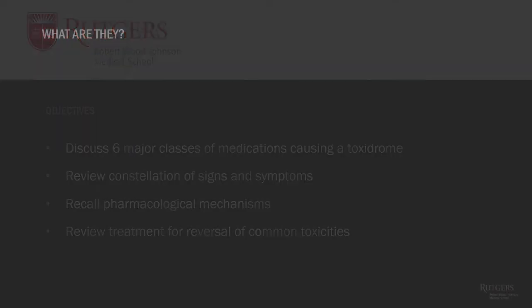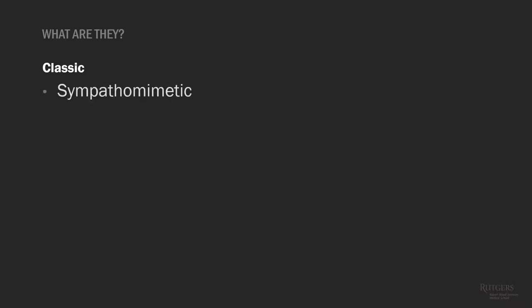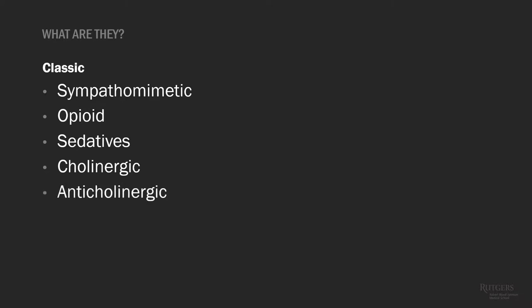So what are toxidromes? Most of them are included in what we call classic toxidromes. These include sympathomimetic, opioid, sedatives, cholinergic, and anticholinergic. And then an additional one that's not really a classic but is also good to know in practice is serotonergic.